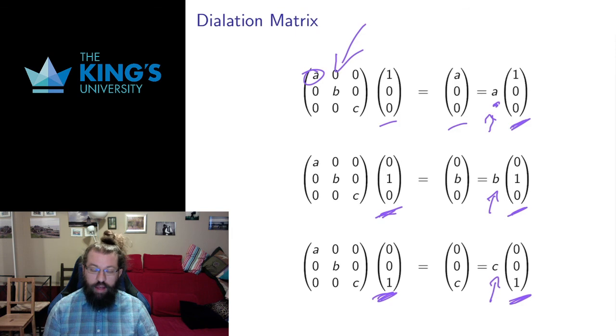So a dilation matrix has the axis vectors as its eigenvectors, and its eigenvalues are the scaling factors a, b, and c of the dilation. Again, this is an example where the eigenvectors are all perpendicular to each other, but that doesn't have to be true in general.